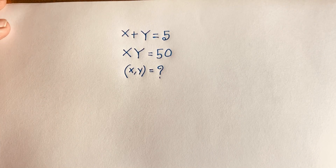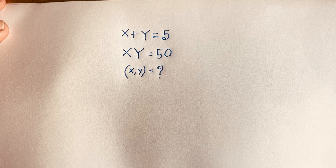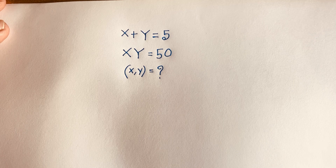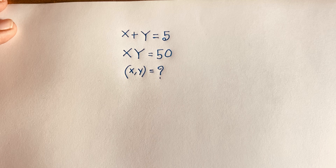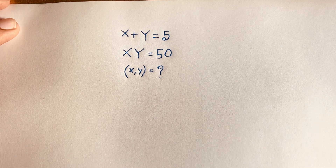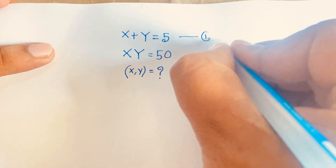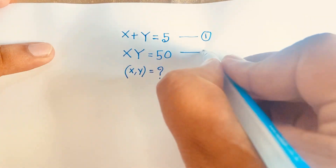Hello everyone. In this video we have solved this interesting math question: x plus y is equal to 5, x times y is equal to 50, and x and y is equal to what. It is an interesting math problem because there is no real solution. Let's start. This is our first equation and this is our second equation.